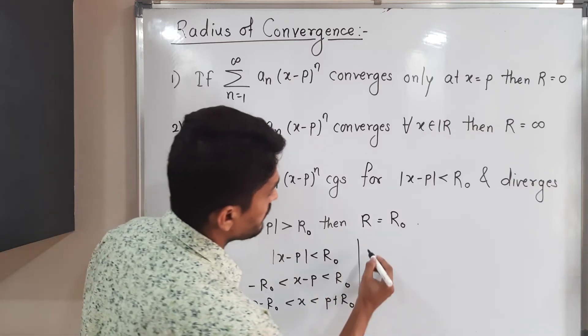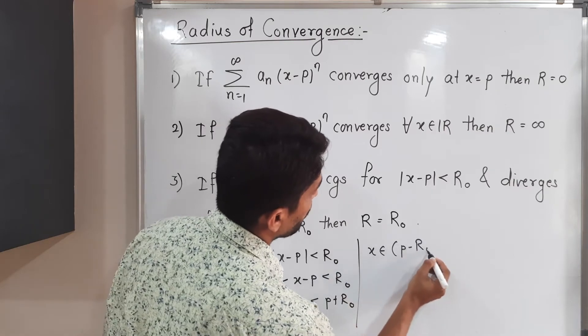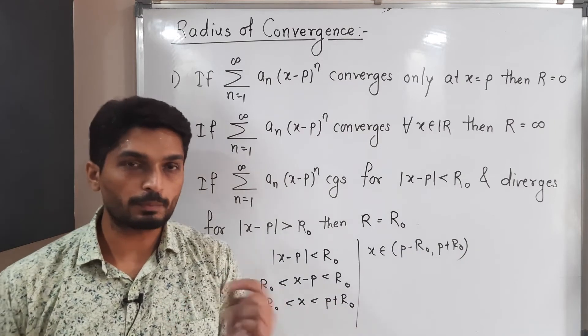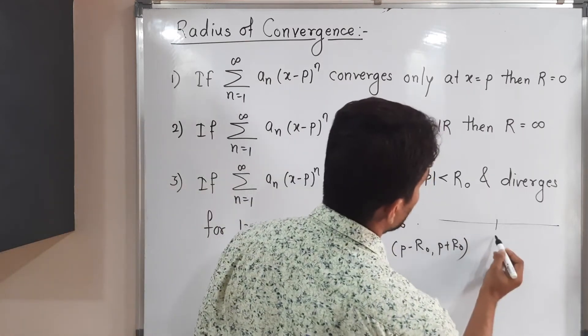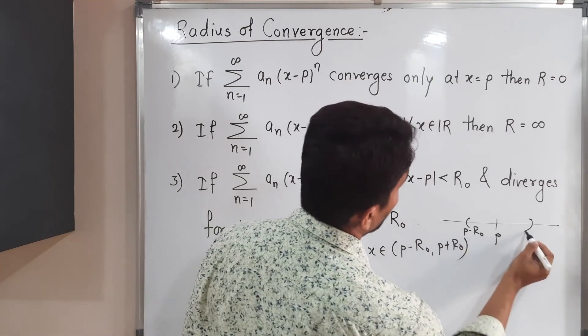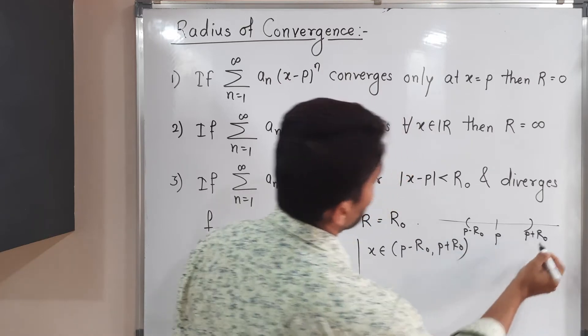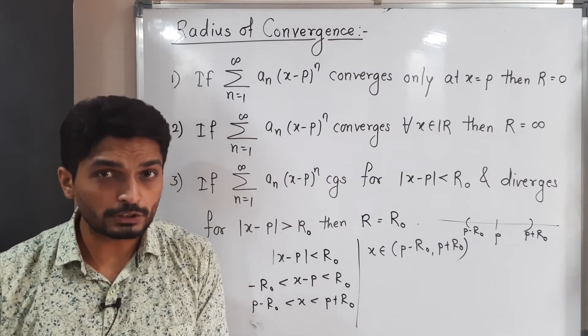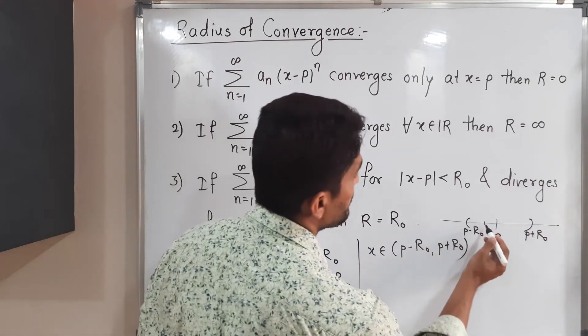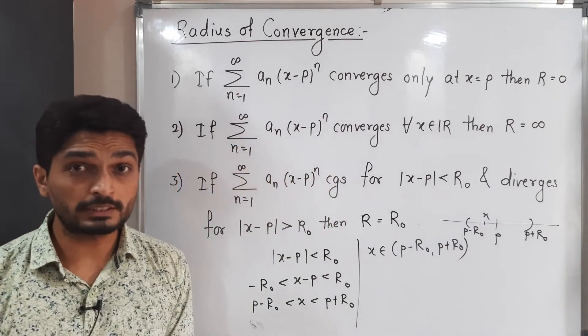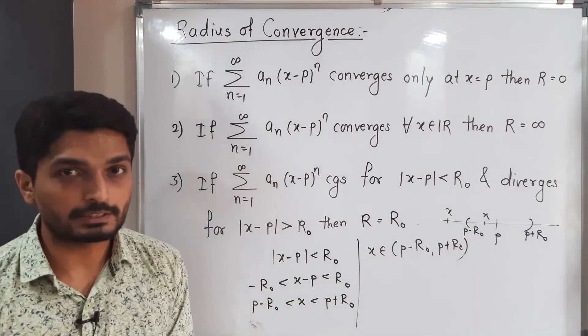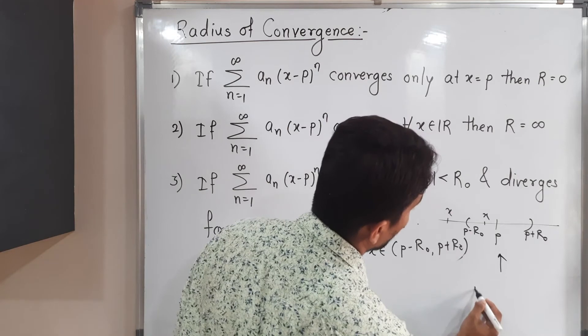That means what we get, x belongs to (p-R_0, p+R_0). That means for this interval only, p-R_0 to p+R_0, I will draw the diagram so you can easily understand. This is a power series around point p. So p-R_0 will be here and p+R_0 will be here. So that means for this interval, series is convergent and for remaining part it is divergent series. That means if you select any point x from here, series will be convergent series. And if you take any point x outside the interval, series is divergent series.